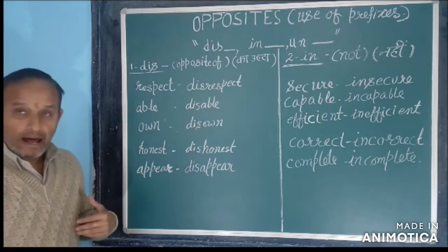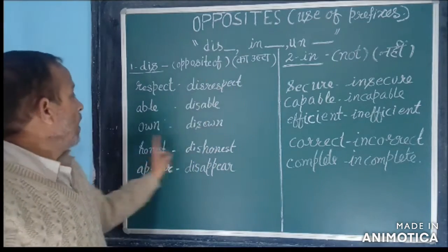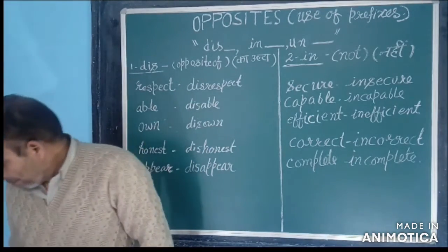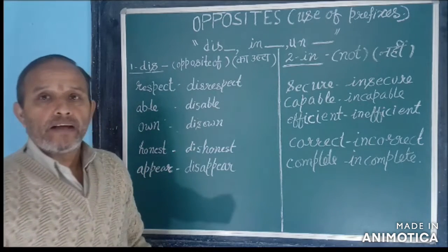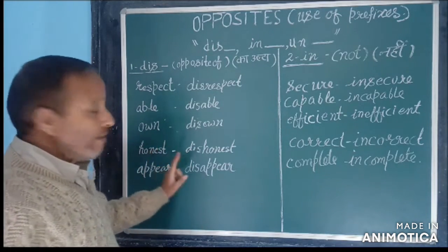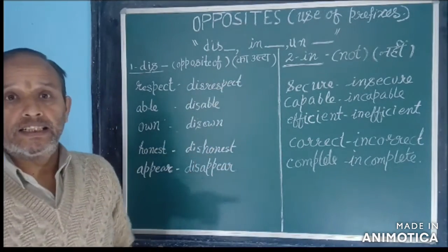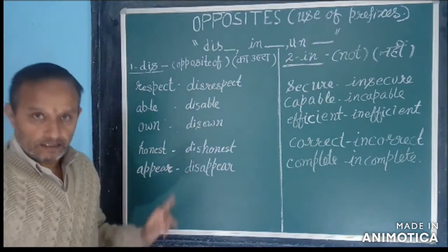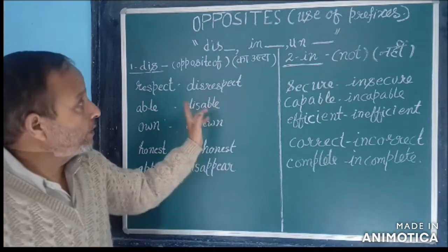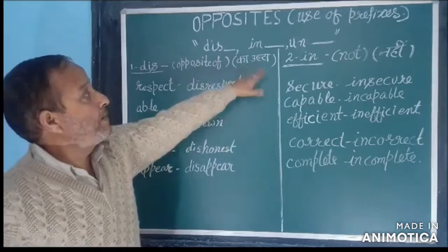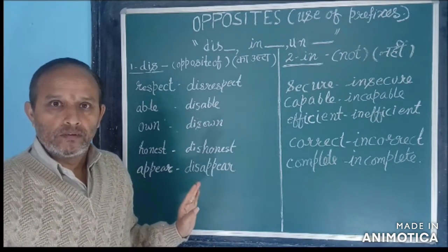Own (अपना) → Dishown — meaning 'not one's own', the opposite of own. Honest (ईमानदार) → Dishonest (ईमानदार नहीं), meaning not honest, the opposite of honest. Appear (प्रकट होना, to appear) → Disappear, the opposite of appear. Is it clear?